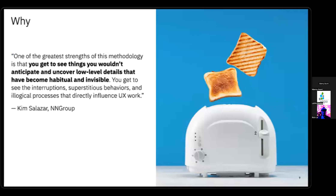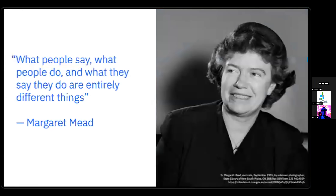Contextual inquiry is useful because you get to see things you wouldn't anticipate and uncover low-level details that have become habitual or invisible for the people you're researching. For example, if I asked someone to describe the steps they take to make toast, they might say: get a piece of bread, arrange it in the slots, push down the lever, and wait. Contextual inquiry helps find out things like: what kind of bread do they use, what setting do they put on the toaster? It may also reveal they use a toaster oven rather than a typical toaster. As Margaret Mead said: what people say, what people do, and what they say they do are entirely different things.